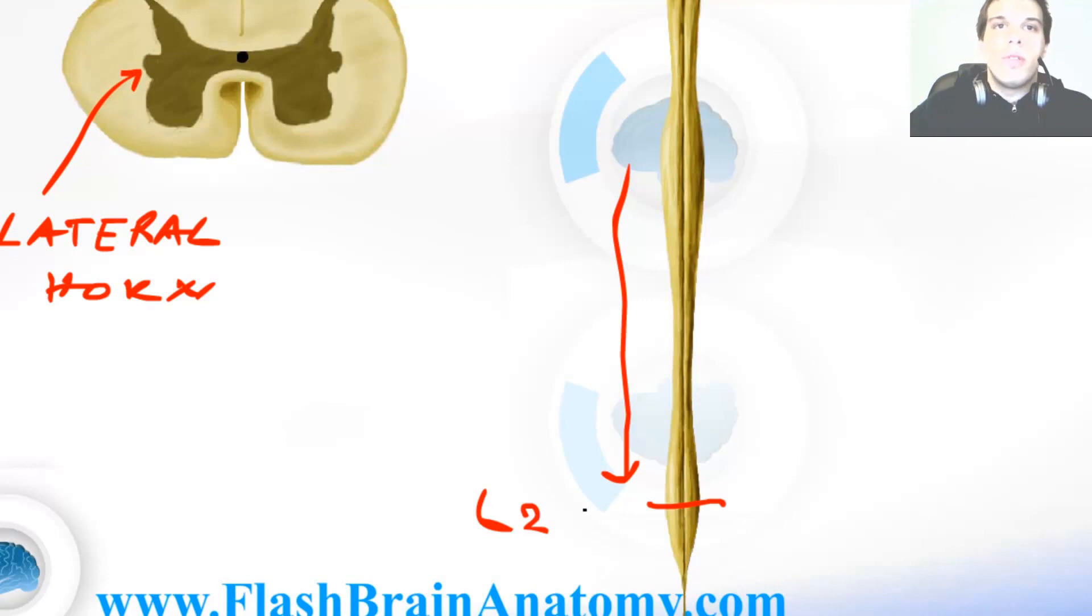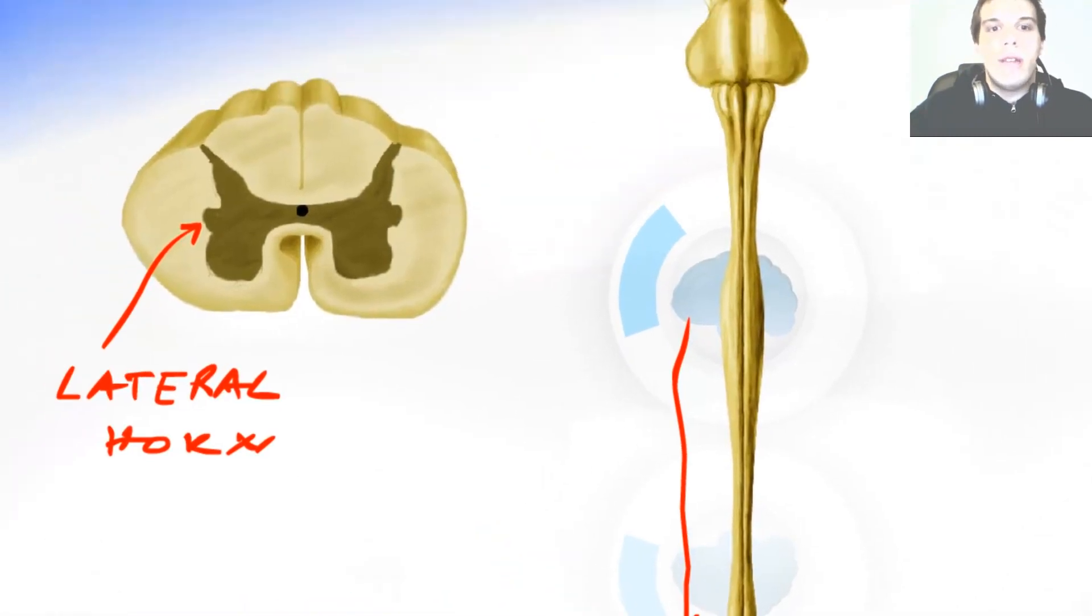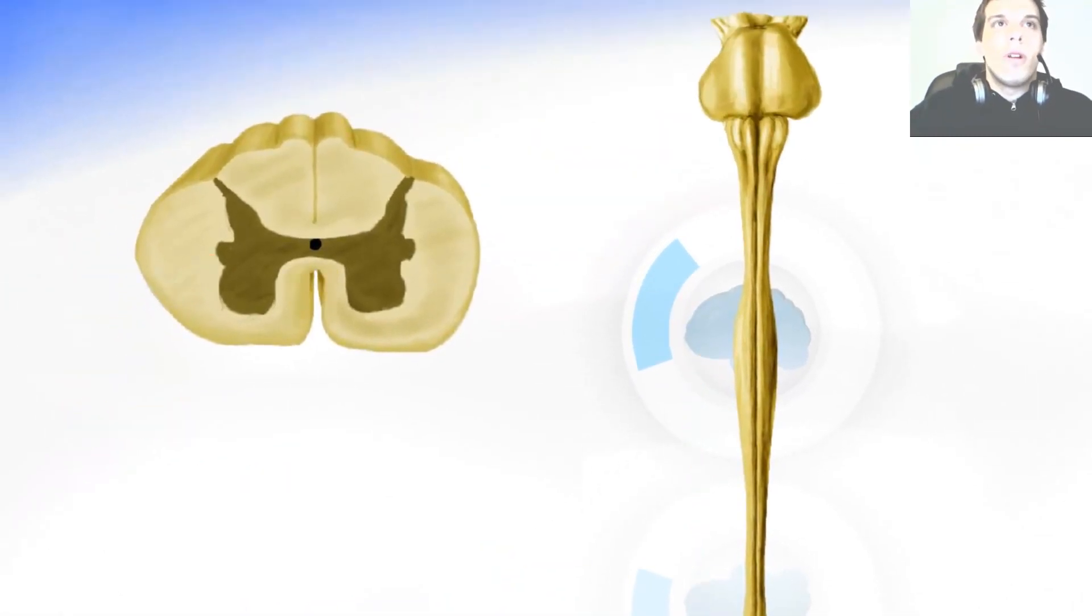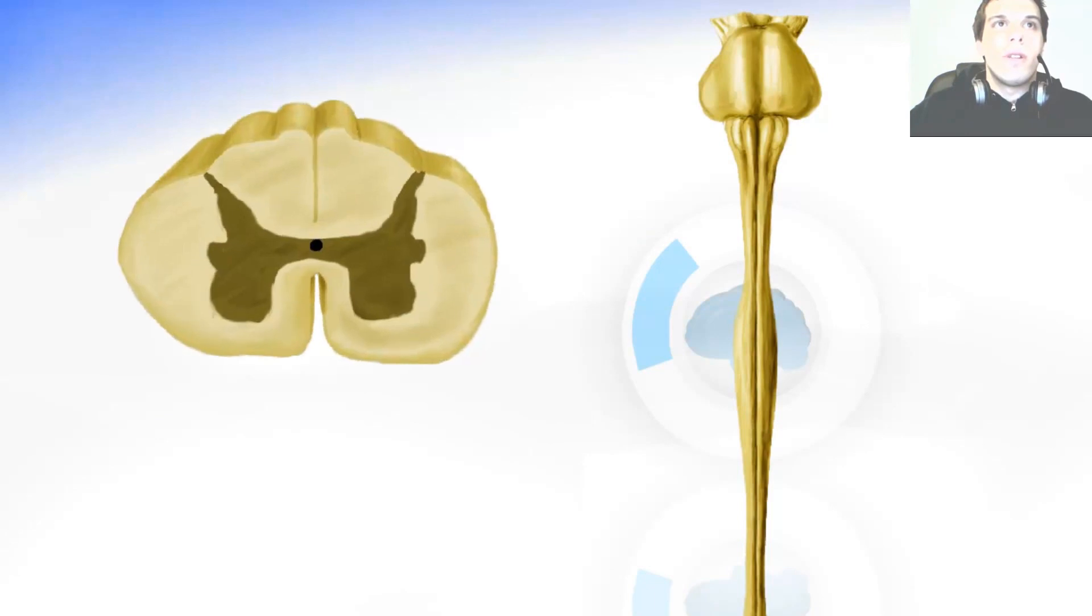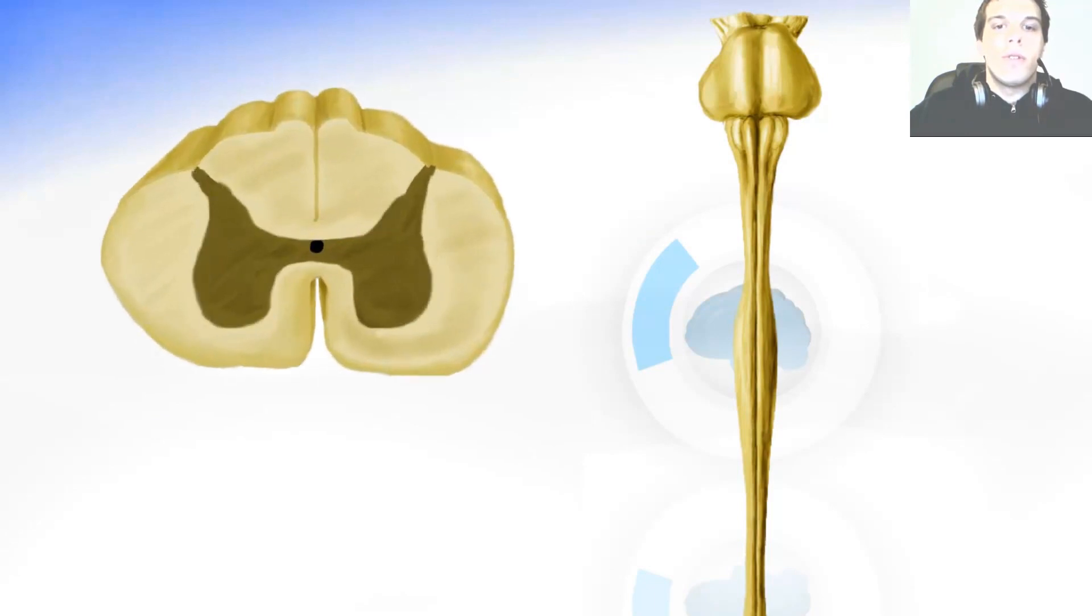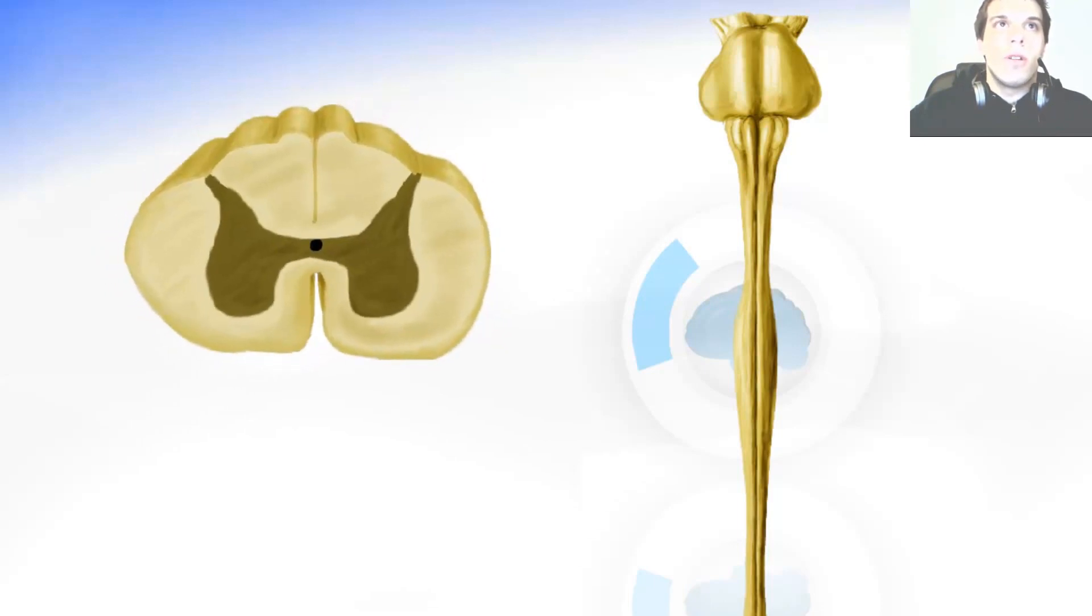Now the lumbar part is going to look different. It's going to be bigger and have different gray matter shape. And of course then comes the sacral part. It's going to be smaller and also a different gray matter shape.